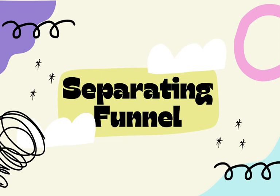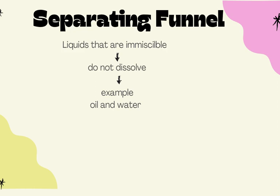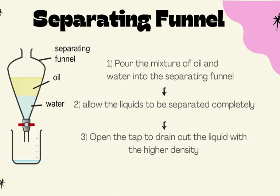A separating funnel is used to separate a liquid-liquid mixture where the liquids are immiscible — meaning they cannot dissolve into one another, for example oil and water. Oil is less dense and floats on top of water. You pour the mixture into the separating funnel and use the tap to drain off the water first, followed by the oil.